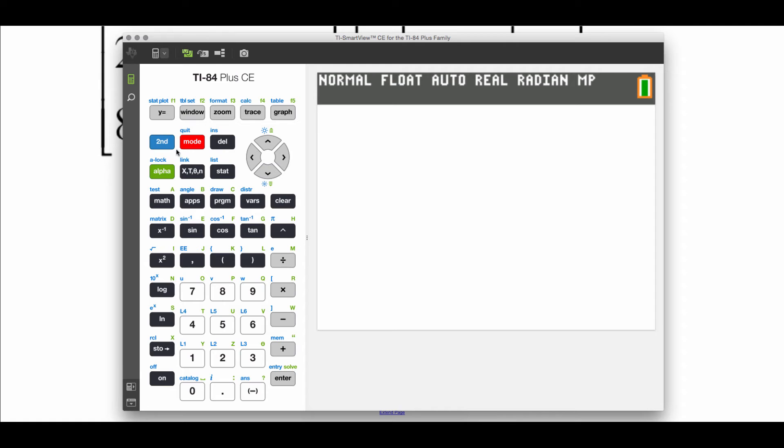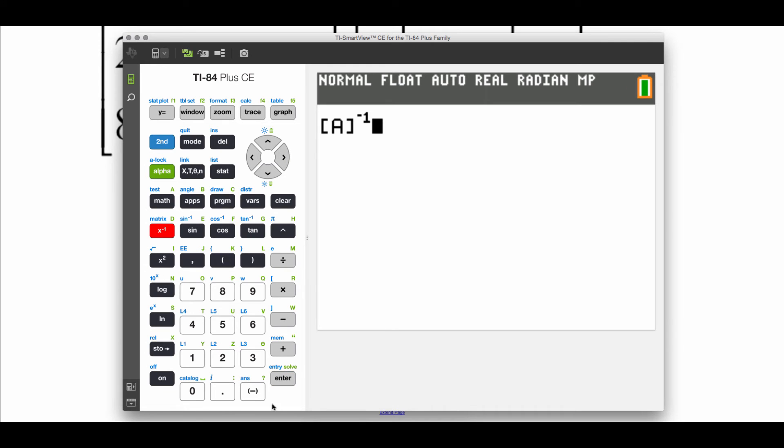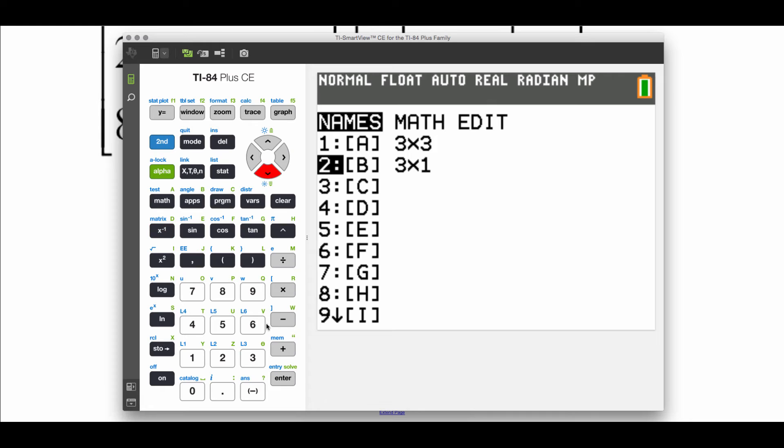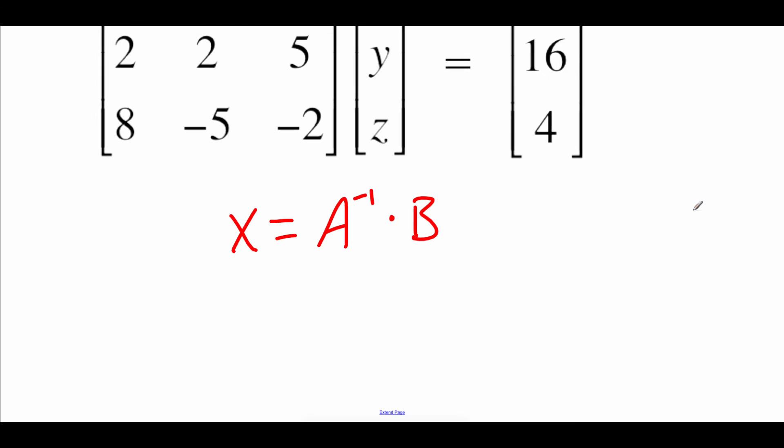Now we said in order to solve this, we were going to take the inverse of A times matrix B. So let's do that. Second matrix A, we'll do the inverse of that, and then multiply our answer by second matrix B. So we get this new three by one matrix, five, eight, negative two.